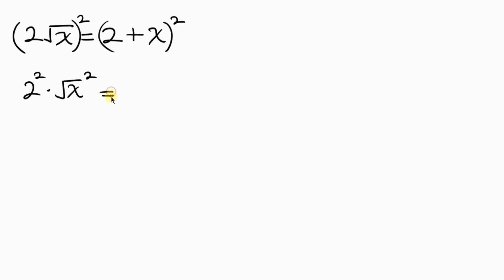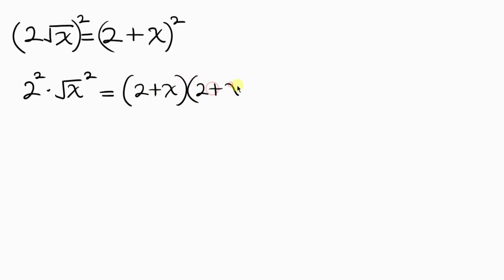This is equal to the right hand side: 2 plus x, all squared, which can be written as 2 plus x times 2 plus x. Now 2 squared is 4, and the square cancels out the square root, leaving behind x, so the left side is 4x.